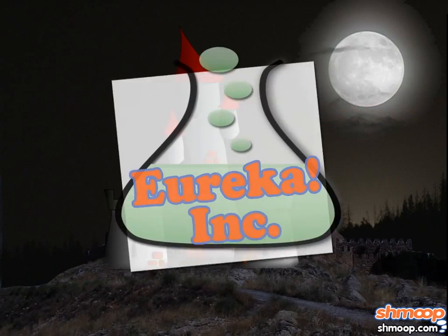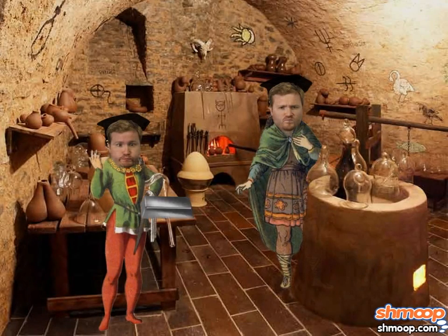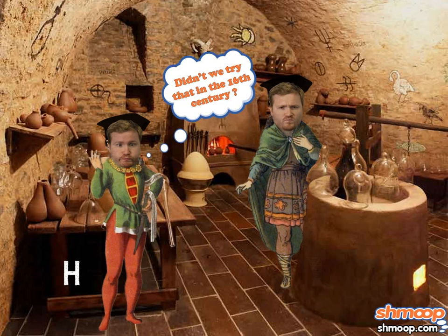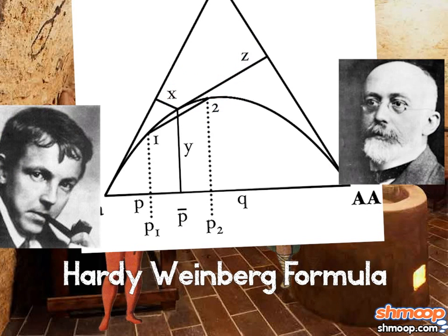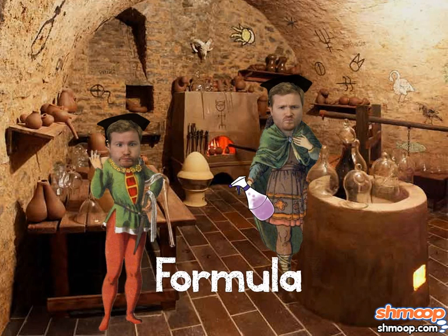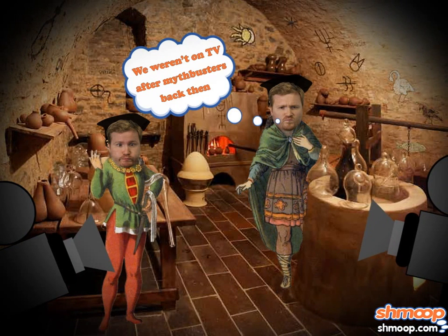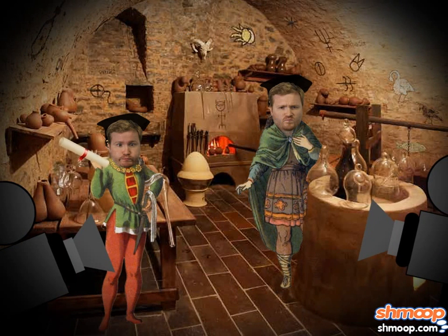Since the Dark Ages, the alchemists of Eureka Incorporated have been trying as hard as they can to turn lead into gold. They've experimented with every formula known to man: the Empirical Formula, the Hardy-Weinberg Formula, Formula 409. Now that they have a new reality show documenting their efforts, they will try the Quadratic Formula.